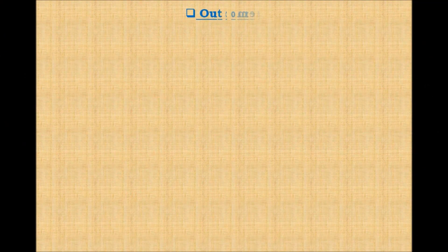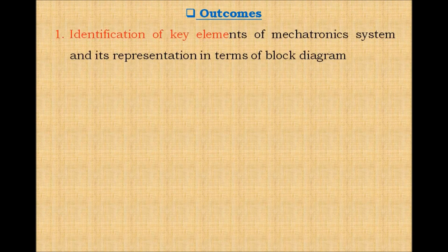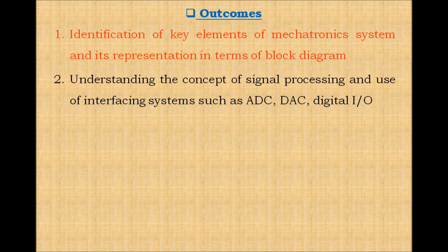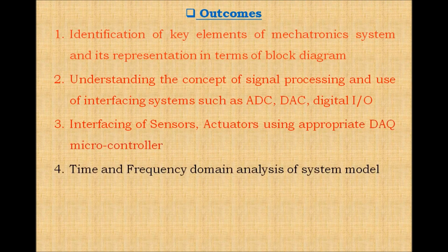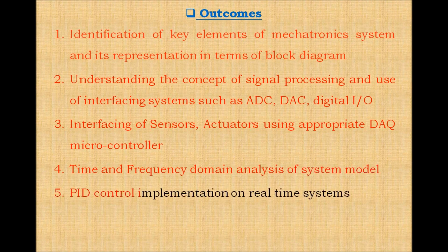After completing this course, one can understand the following points. First, identification of key elements of a mechatronics system and its representation in terms of block diagram. Second, understanding the concept of signal processing and use of interfacing systems such as analog to digital converter, digital to analog converter, and digital input/output signals. Third, interfacing of sensors and actuators using an appropriate microcontroller. Fourth, time and frequency domain analysis of a system model. Fifth, PID control implementation on real-time systems.